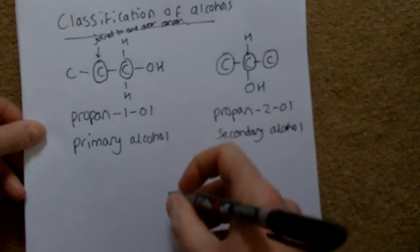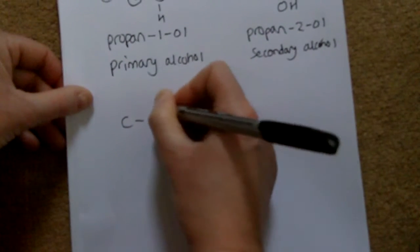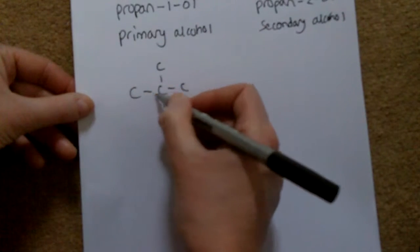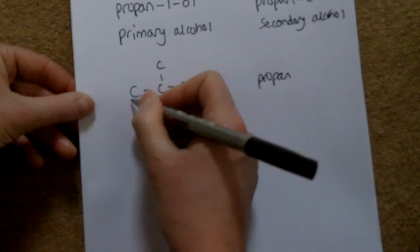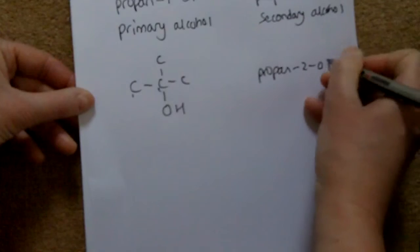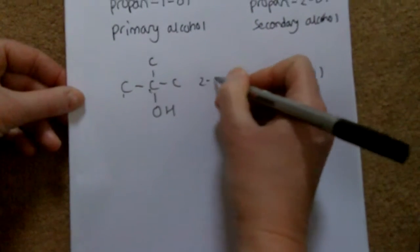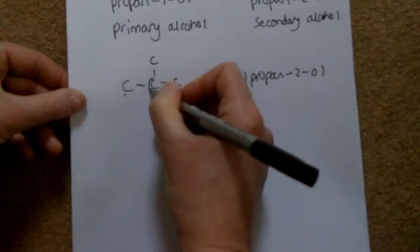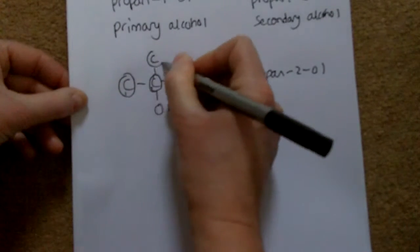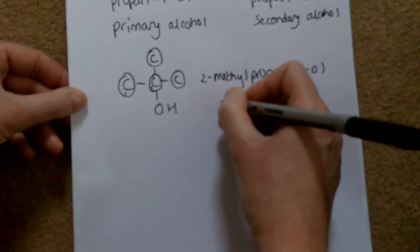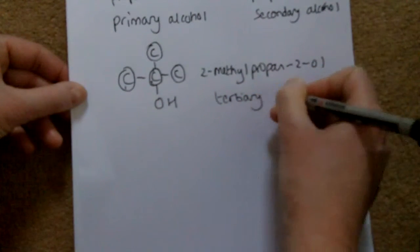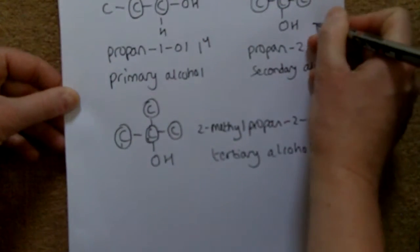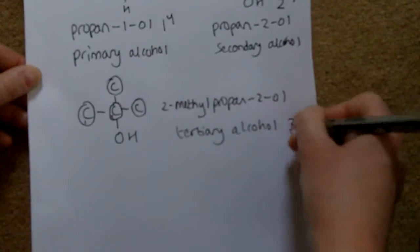Finally, the third type of alcohol. The longest chain is propane, the OH is on carbon 2, and on carbon 2 there's also a methyl group, so it's 2-methylpropan-2-ol. The carbon the OH is joined to is joined to three other carbons, so that is called a tertiary alcohol. A shorthand is to call them primary, secondary, and tertiary.